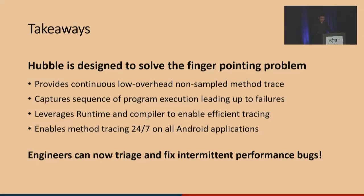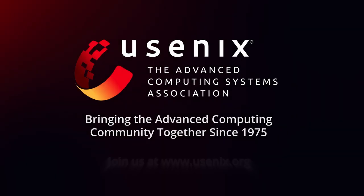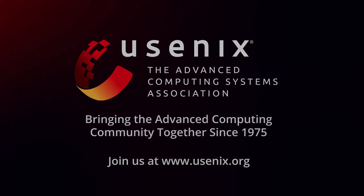For takeaways: Hubble is a low-overhead continuous tracing tool specifically designed to solve the finger-pointing problem when intermittent performance problems in production cannot be reproduced or diagnosed. Hubble is available on all currently supported Huawei phones in China, and beta users have method tracing enabled 24/7 for every single application. Engineers can now triage and quickly address hard-to-reproduce intermittent problems. That's it for this talk — I'll open the floor for questions.